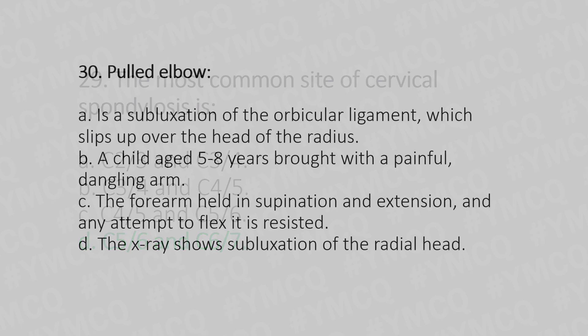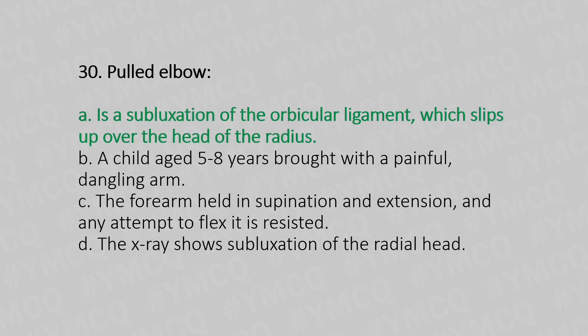Now let's move to question number 30. Pulled elbow. Option A, is a subluxation of the annular ligament which slips up over the head of the radius. Option B, a child aged 5 to 8 years presents with a painful and drooping arm. Option C, the forearm is held in supination and extension and any attempt to flex is restricted. Option D, the x-ray shows subluxation of the radial head. And the answer is Option A, it is a subluxation of the annular ligament which slips up over the head of the radius.